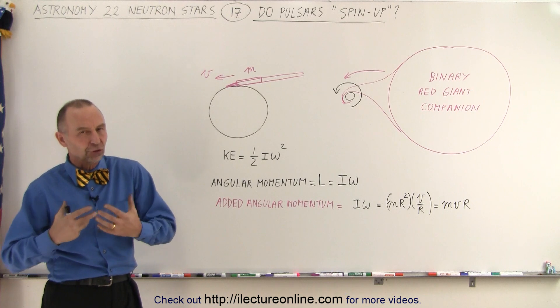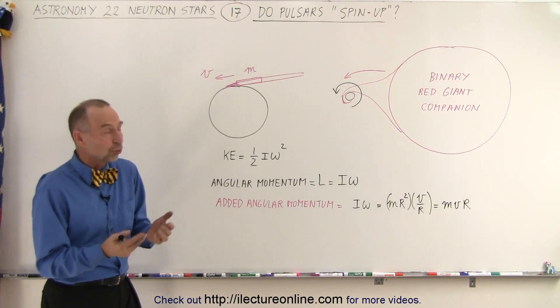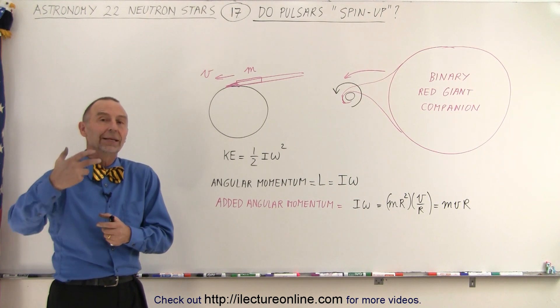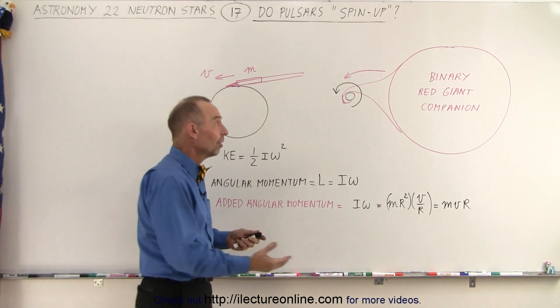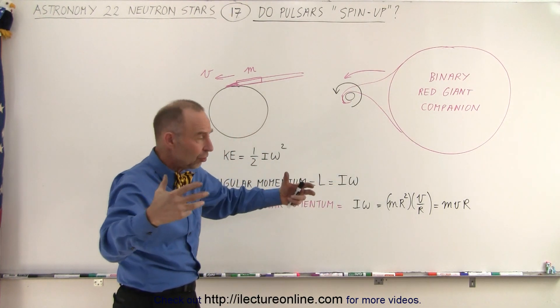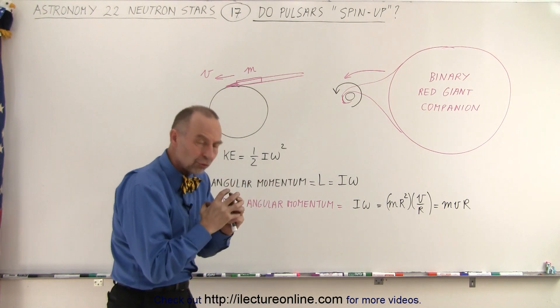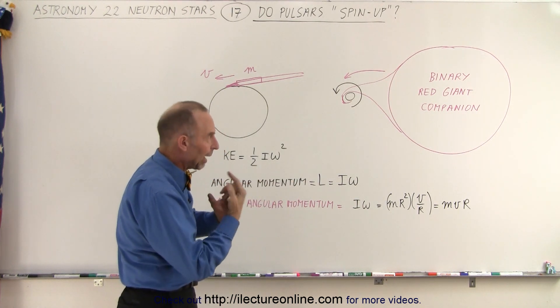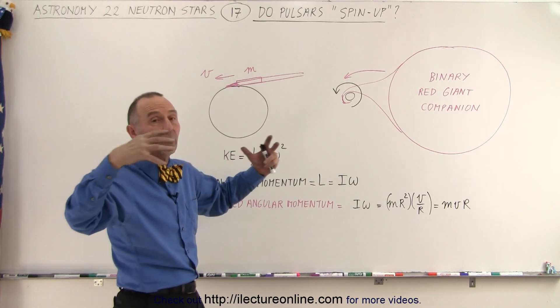But is it possible for pulsars to spin up? The answer is yes. They can spin up in a situation where they can acquire material from a nearby object such as perhaps a binary red giant companion. So let's say there's two stars, one already went through its supernova stage and now it's a neutron star, it's rotating very rapidly on its axis, and there's a companion star that now has become a red giant.